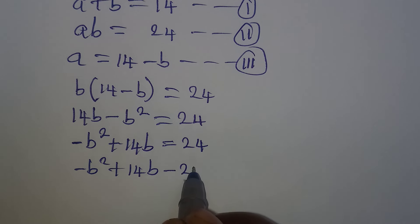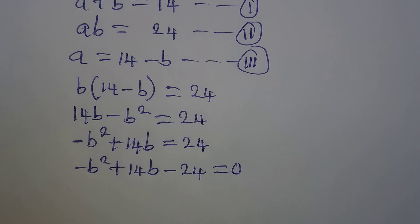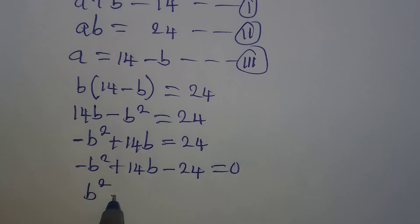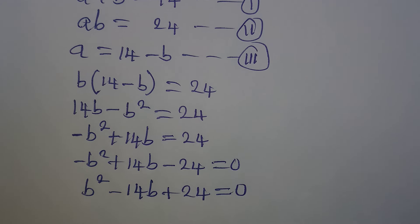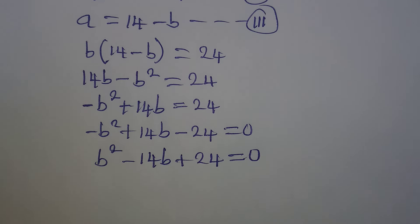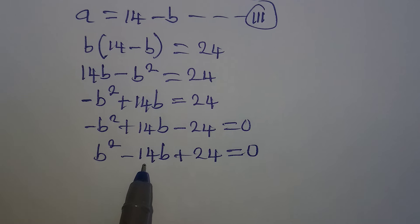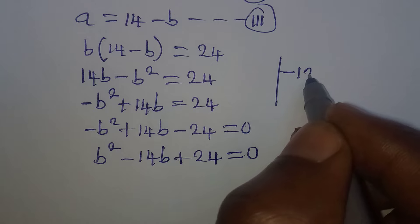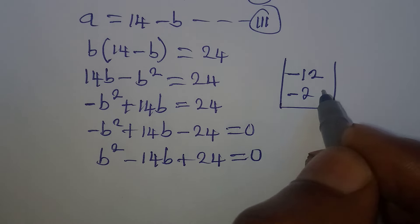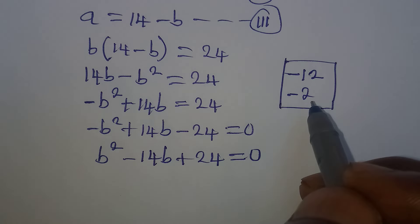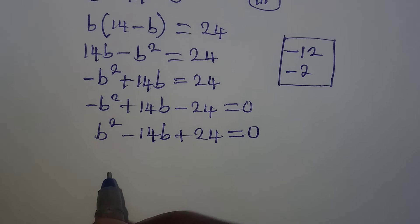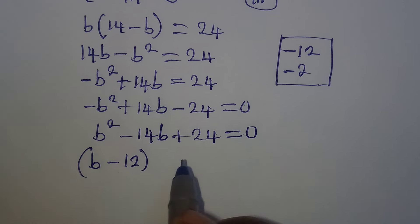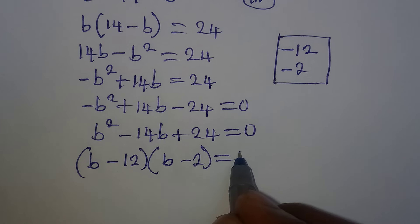Bringing everything to the same side we have minus b² plus 14b minus 24 equals zero. This is a quadratic equation, but we don't want the negative b², so we multiply through by negative one: b² minus 14b plus 24 equals zero. We are looking for two numbers that multiply to get 24 and add to get minus 14. The two numbers are minus 12 and minus 2, because minus 12 times minus 2 is positive 24, and minus 12 plus minus 2 is minus 14. So the first factor is b minus 12 and the second factor is b minus 2, and these equal zero.